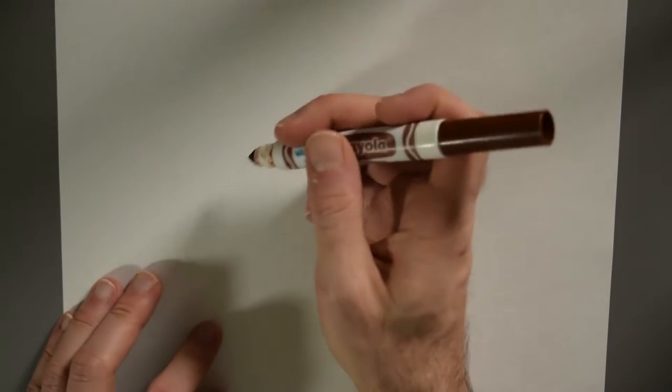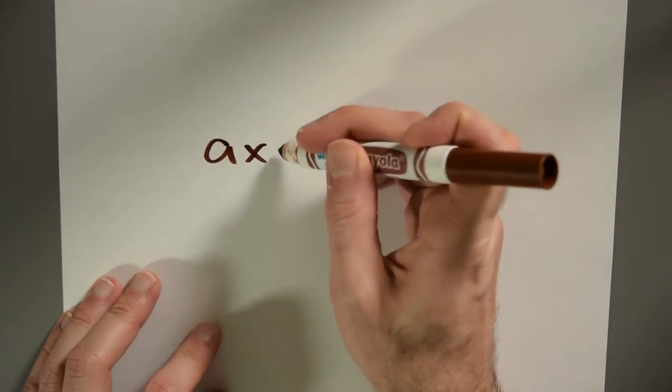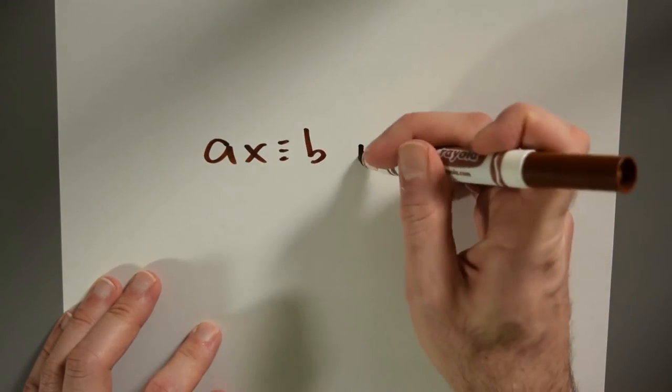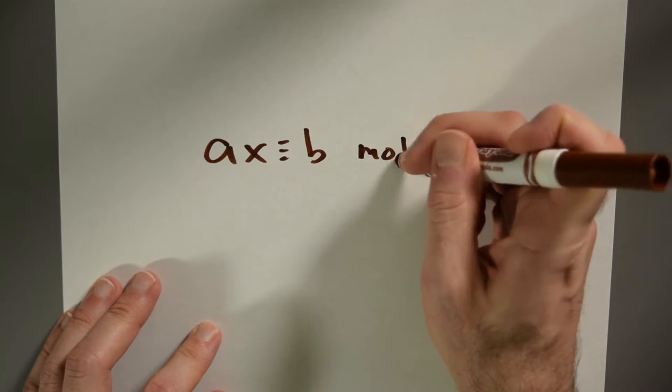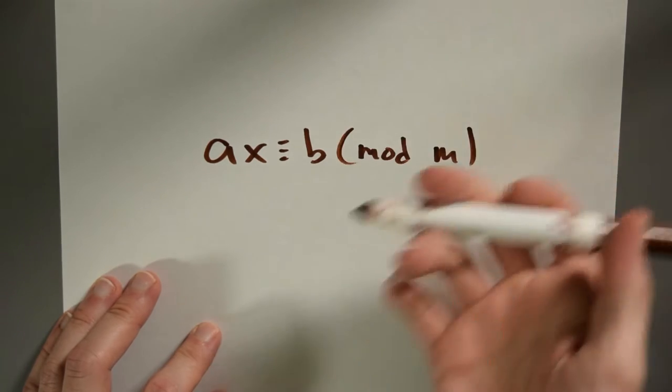We've already seen how to solve linear congruences — congruences like ax is congruent to b modulo m. Now let's attack some quadratic problems.